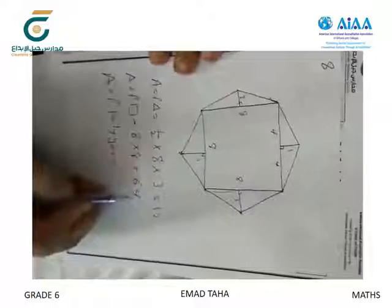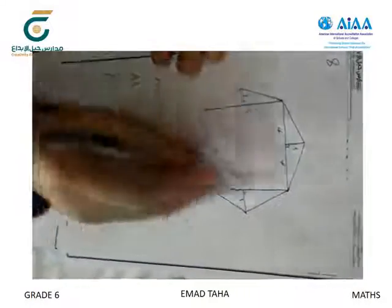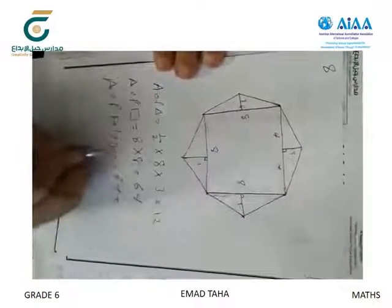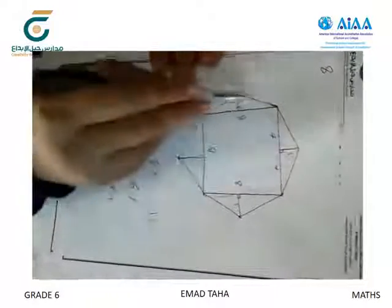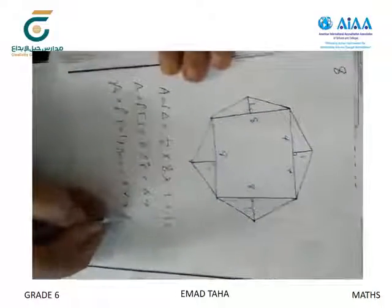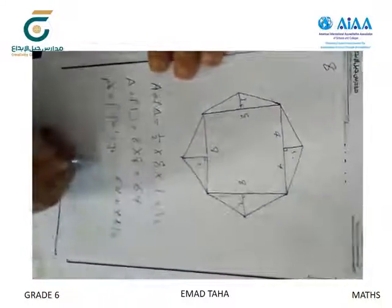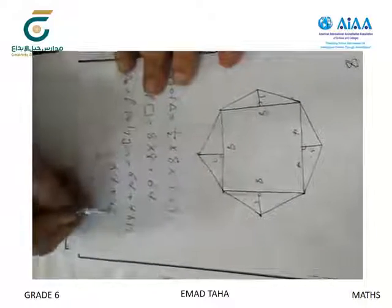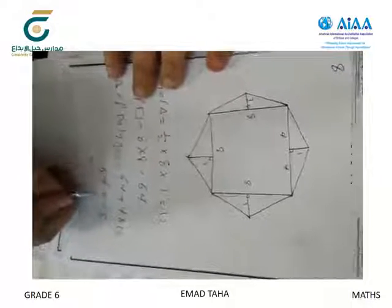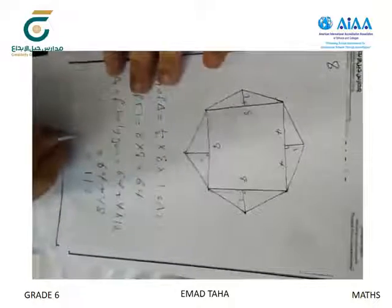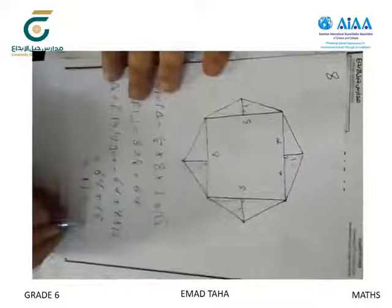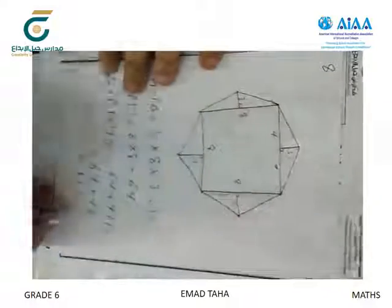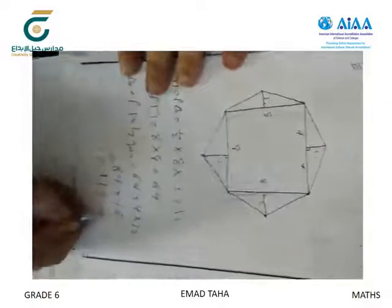Now, the area of the polygon equals the area of the square plus the area of the four triangles. One triangle equals 12, so four triangles equal 4 times 12 equals 48. Then 64 plus 48 equals 112. Put the unit: square feet or square inches.